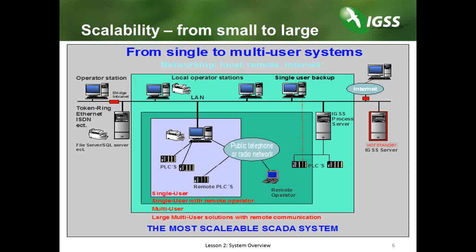A second server can be implemented, for instance as a backup server solution. We see a hot standby IGSS server which goes online and functions as a primary server to collect process data as soon as the primary server goes offline. This larger gray area depicts a large multi-user solution with remote communications. You can also control the system via the internet at a remote location. The IGSS software supports Ethernet, Fast Ethernet, ISDN, and the old token ring protocol.